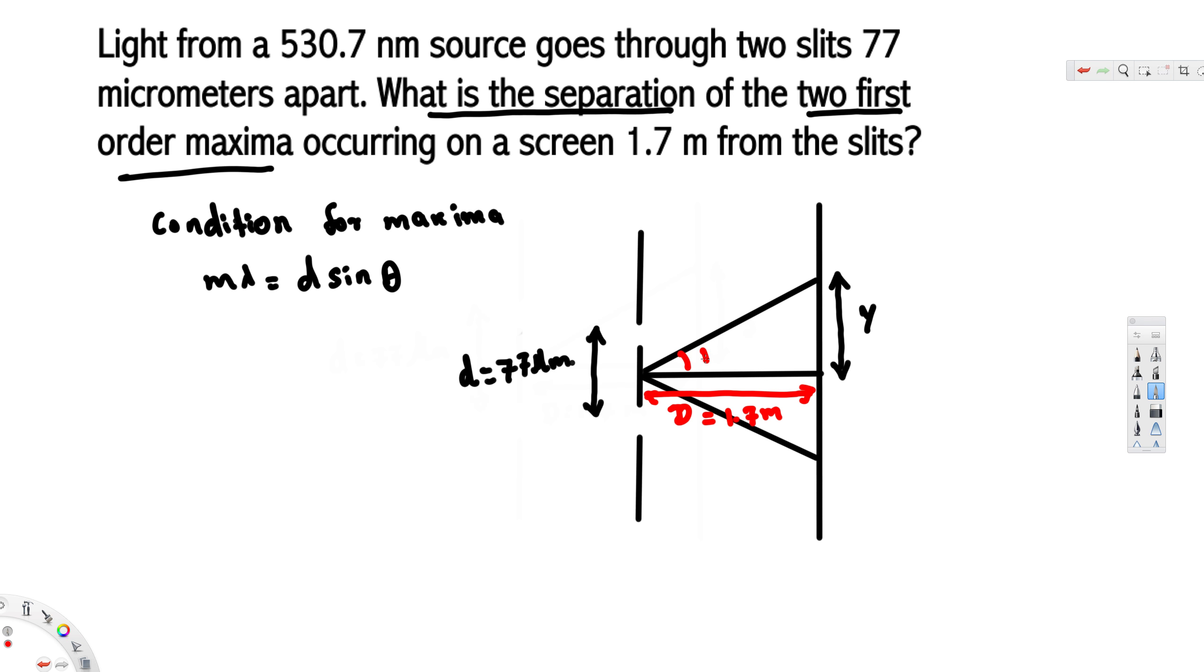This is our angle theta, and this one is y. If they ask for the separation of the two first order maxima, it means 2y from here to here. This is what we are trying to find, but it's always easy to take this y and solve for this one, then multiply by 2. That's what we are going to do.